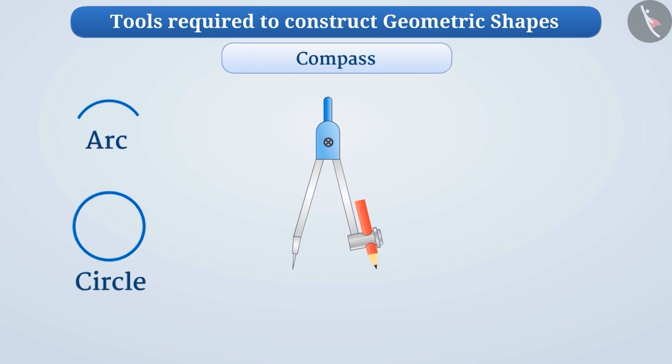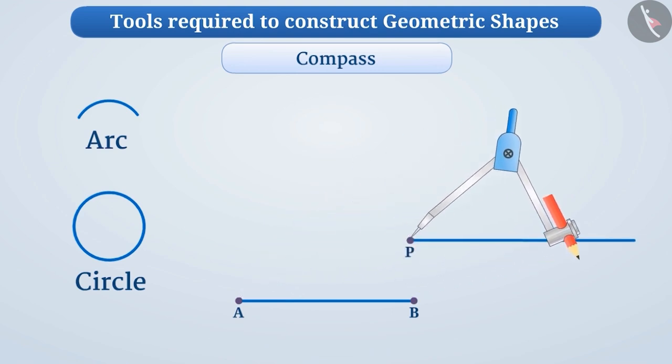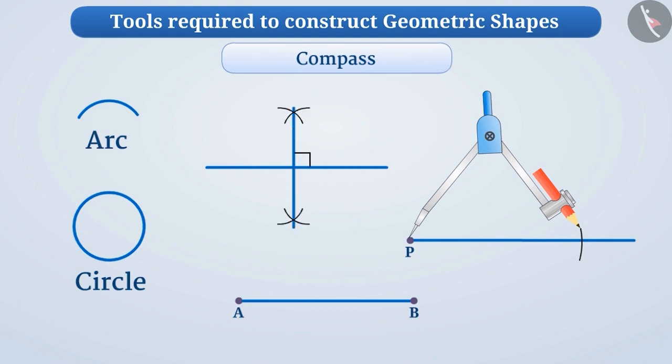By adjusting the compass, the distance between the pointed end and the pencil strip is increased or reduced. Thus, the desired distance can be taken in a compass. With this, we use a compass to mark off equal lengths and to make perpendicular lines but not to measure them.